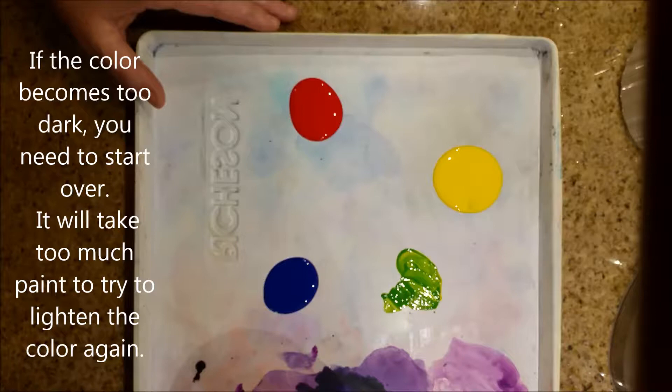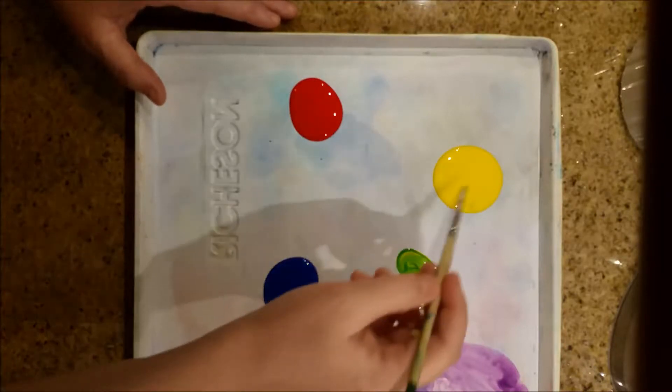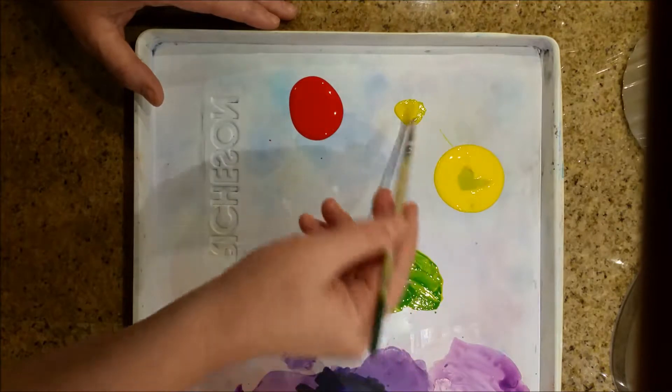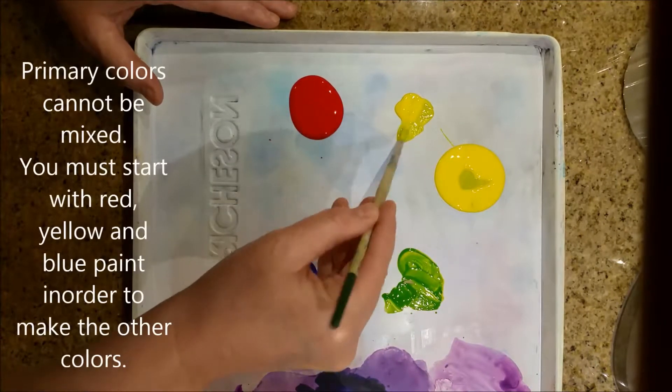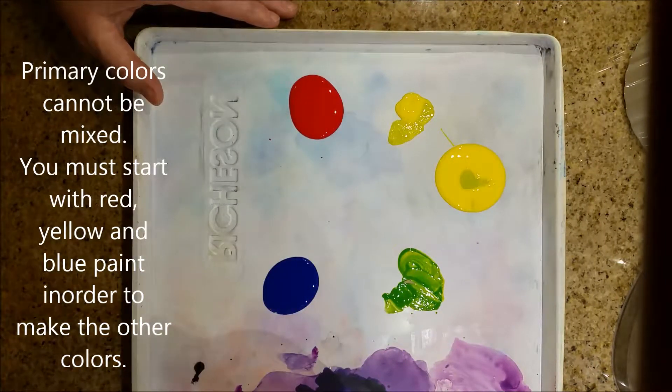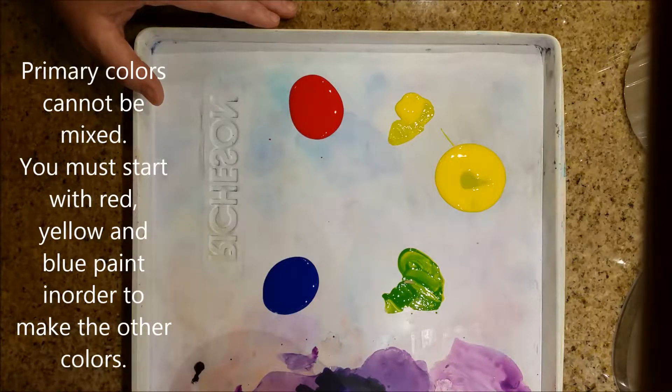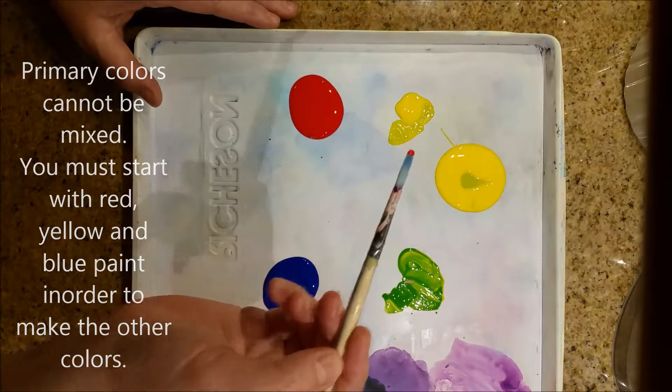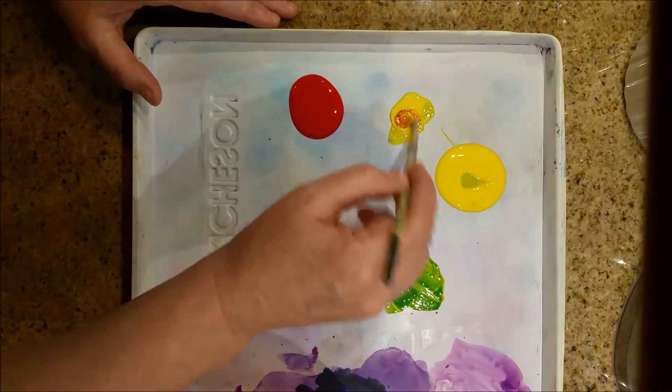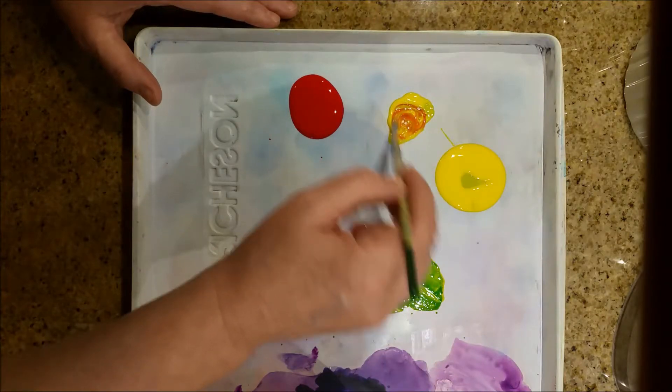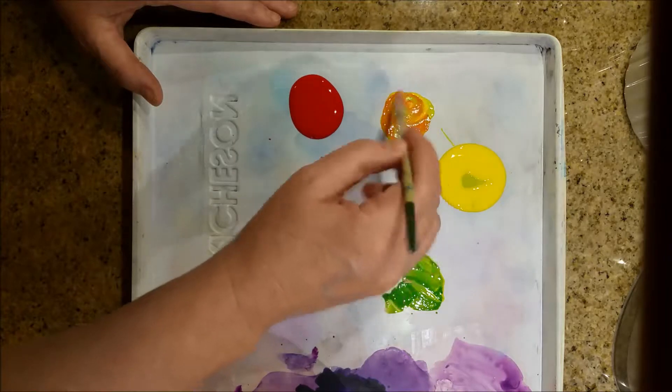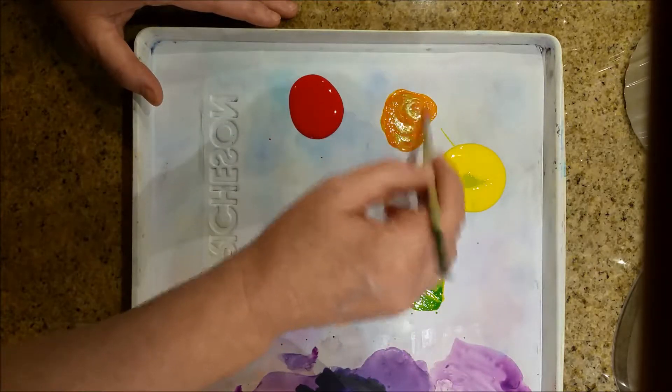If I wanted to go the other direction, again, I would start with yellow, put some yellow over here in a new spot so that it does not contaminate my original yellow. I would take a dot of red and mix it into this yellow. There's more yellow, less red. It only takes a little bit of red to change it to orange.